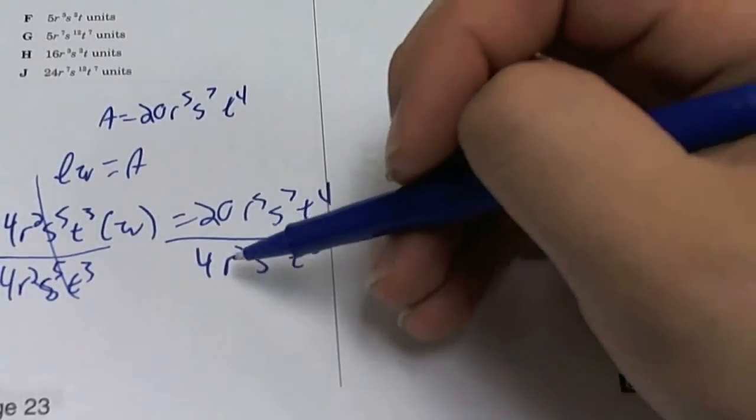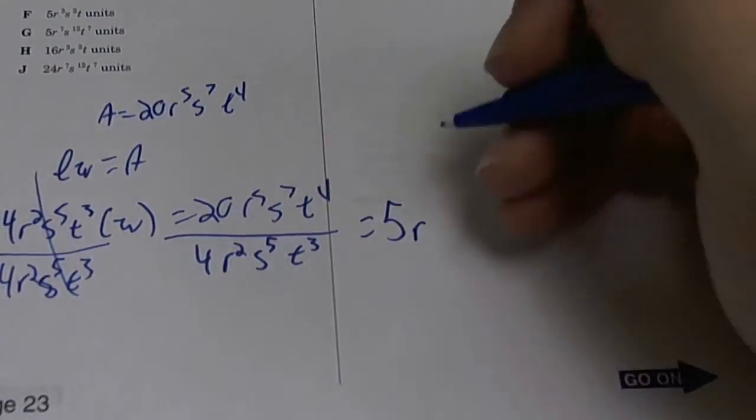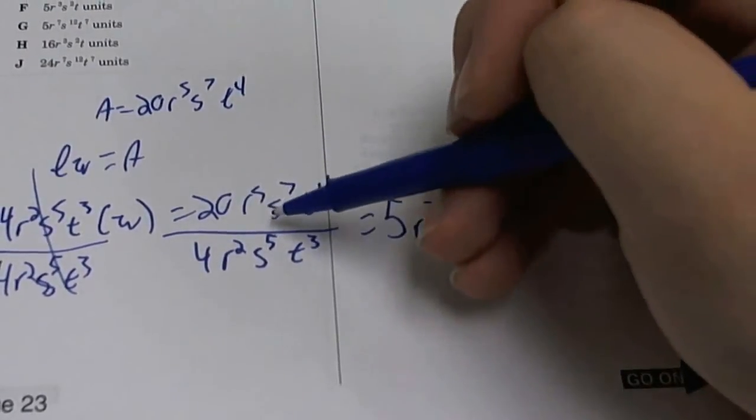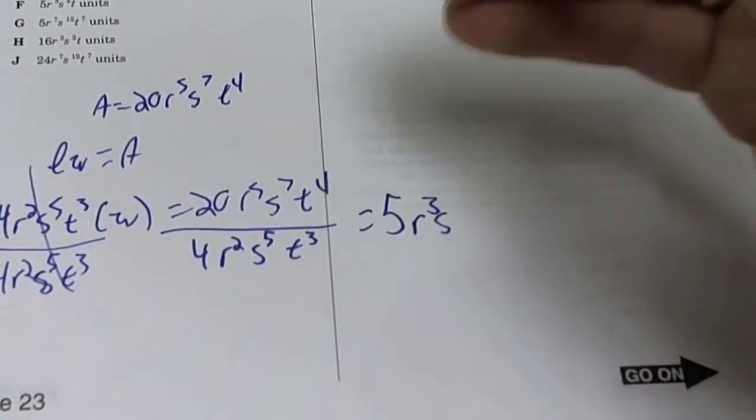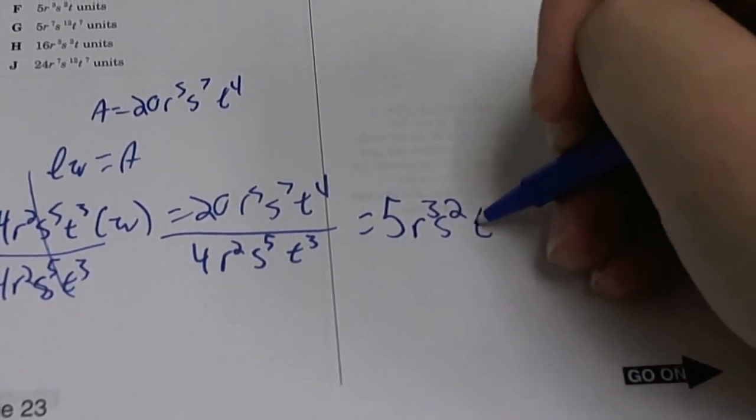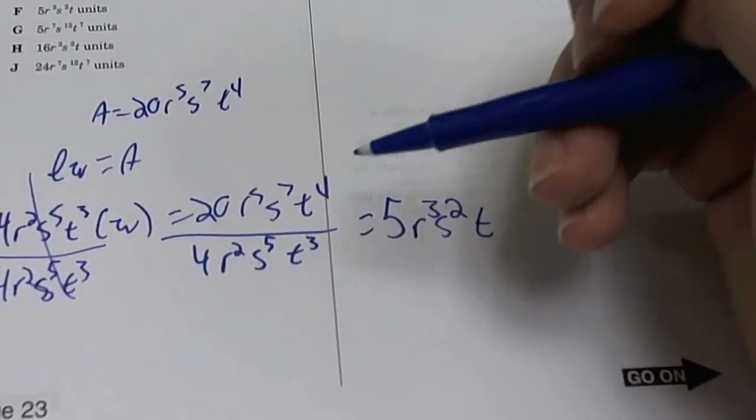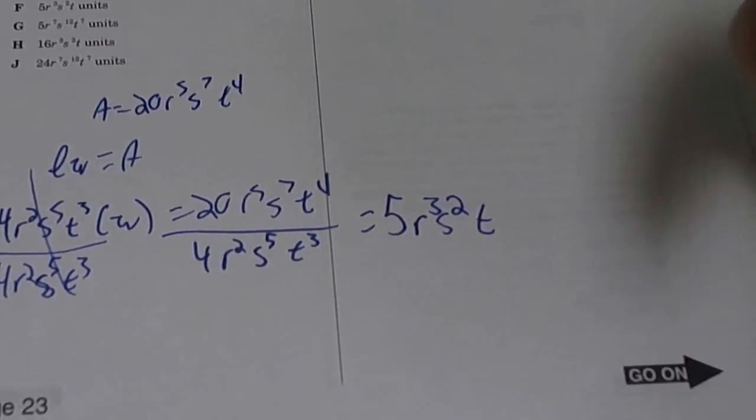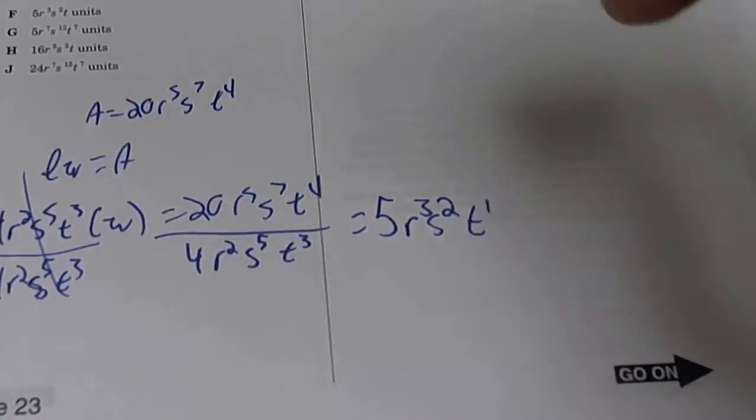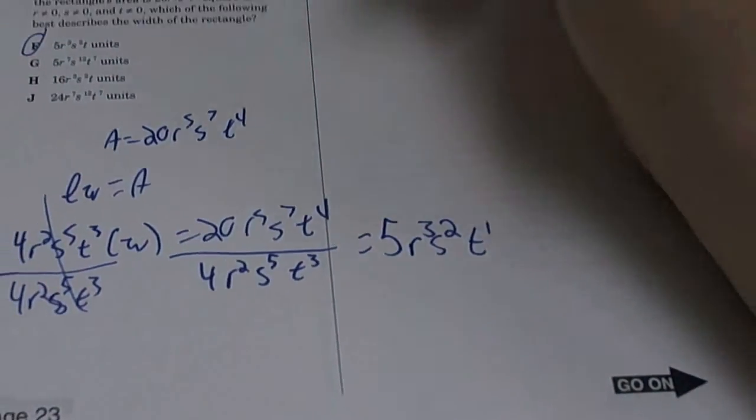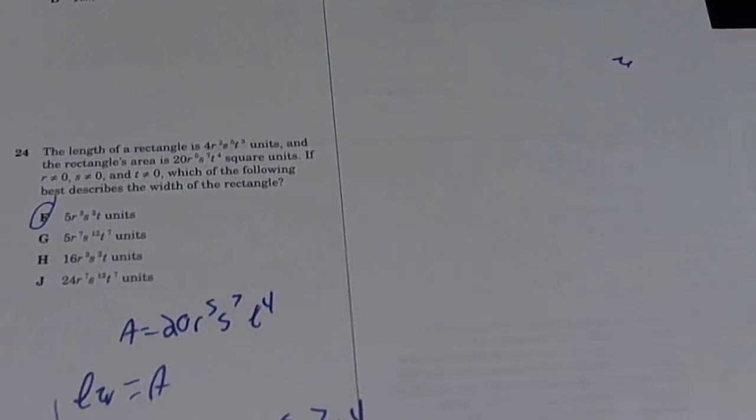R fifth divided by R squared, so it's R to the 5 minus 2, which is 3. S to the seventh and S to the fifth, you subtract - remember the exponents - 7 minus 5 is 2. Now T to the fourth divided by T cubed, again you subtract the exponents, 4 minus 3 is 1. So which one of these is here? And 24 is F, 5R cubed S squared T units.